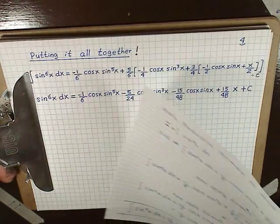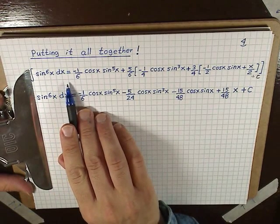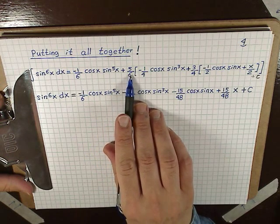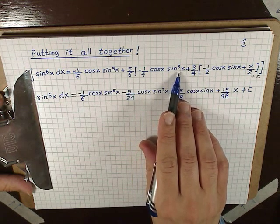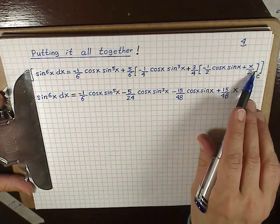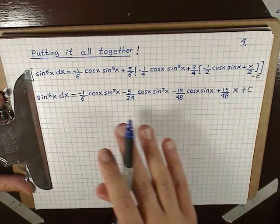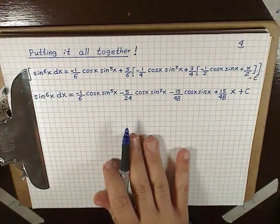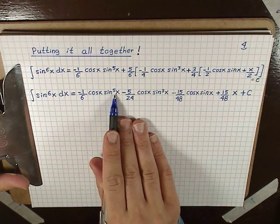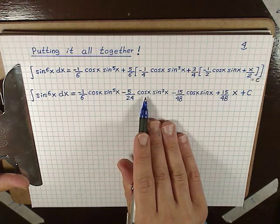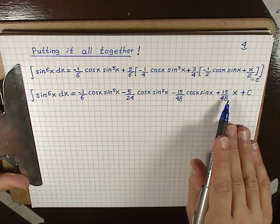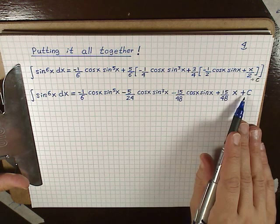Now let's put it all together. The integral of sin^6(x) dx = -1/6 cos(x) sin^5(x) plus 5/6 times [-1/4 cos(x) sin³(x) plus 3/4 times (-1/2 cos(x) sin(x) + x/2)] + C. Simplifying and removing all brackets, we obtain: -1/6 cos(x) sin^5(x) - 5/24 cos(x) sin³(x) - 15/48 cos(x) sin(x) + 15/48 x + C.